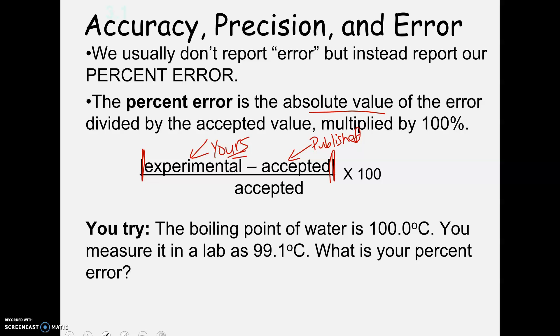So here's a sample one. Let's say you're going to try this, and you read that the accepted value for boiling point of water is 100.0 degrees Celsius. You go to the lab, and you measure it to be 99.1 degrees Celsius. What is your percent error? So this is our published value. This is our experimental value.